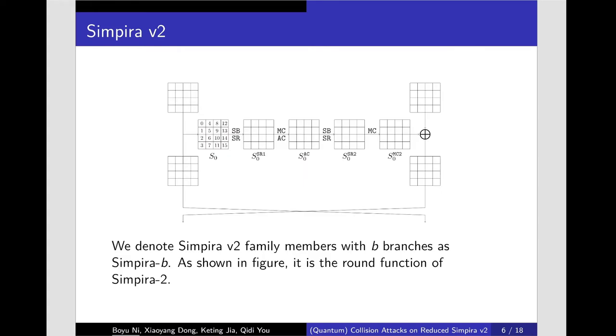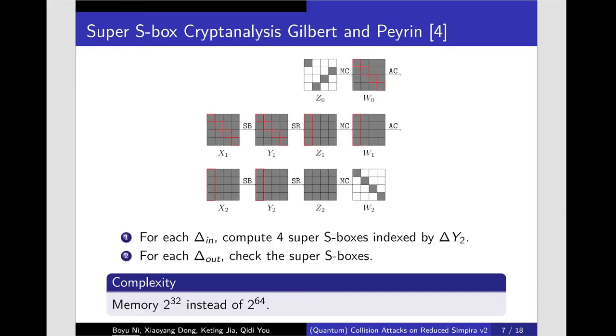As shown in figure, it is a round function of Simpira v2. The round function F consists of an AddConstant operation and two rounds of AES while omitting the AddRoundKey operation.